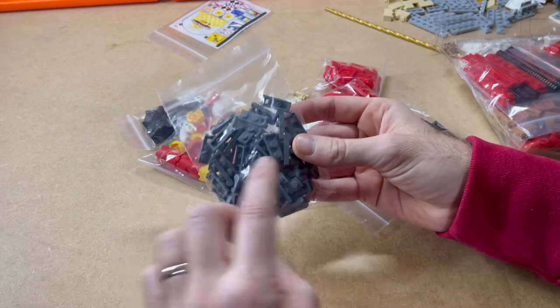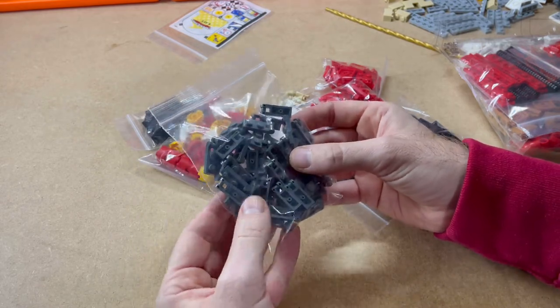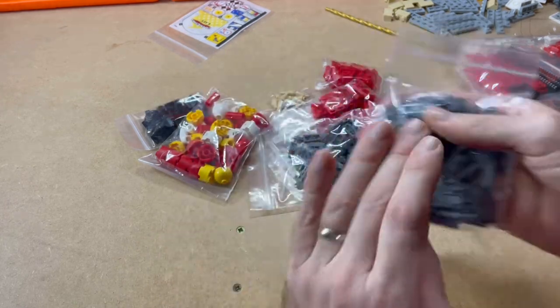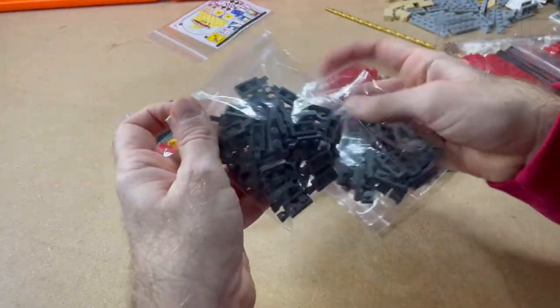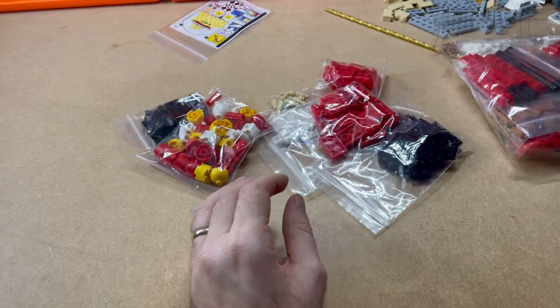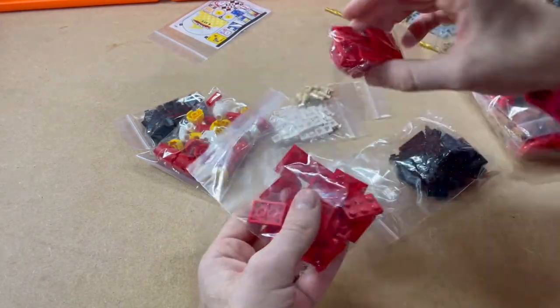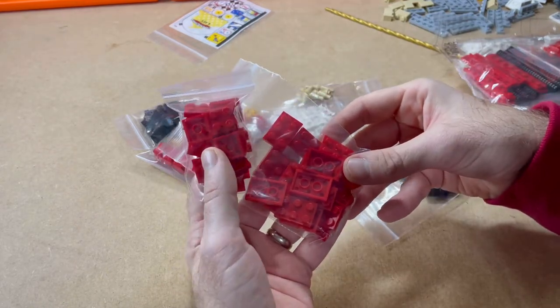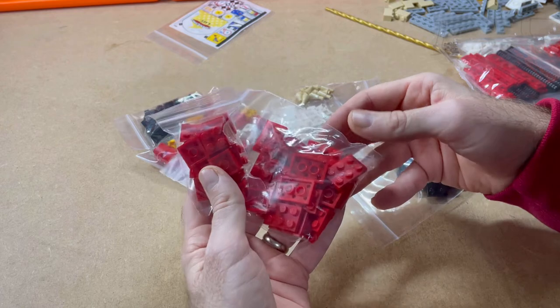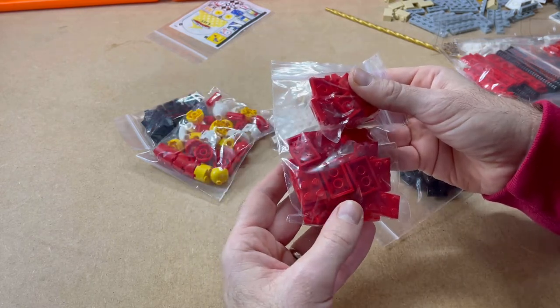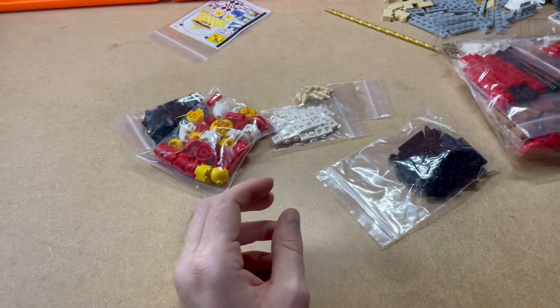Here's just got some dark bluish gray clips. I got both sides of the clip there. I got a load of two by twos and three by twos, red tiles and plates, sorry. And that's just because I want them for my train station.